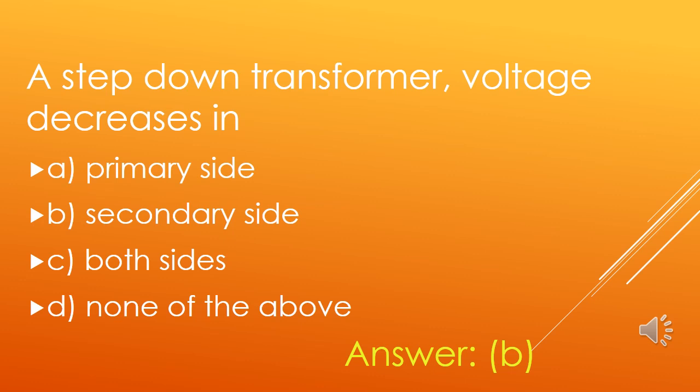In a step-down transformer, voltage decreases in: A. Primary side, B. Secondary side, C. Both sides, D. None of the above. In a step-down transformer, voltage decreases in the secondary side. So, option B is the right answer.